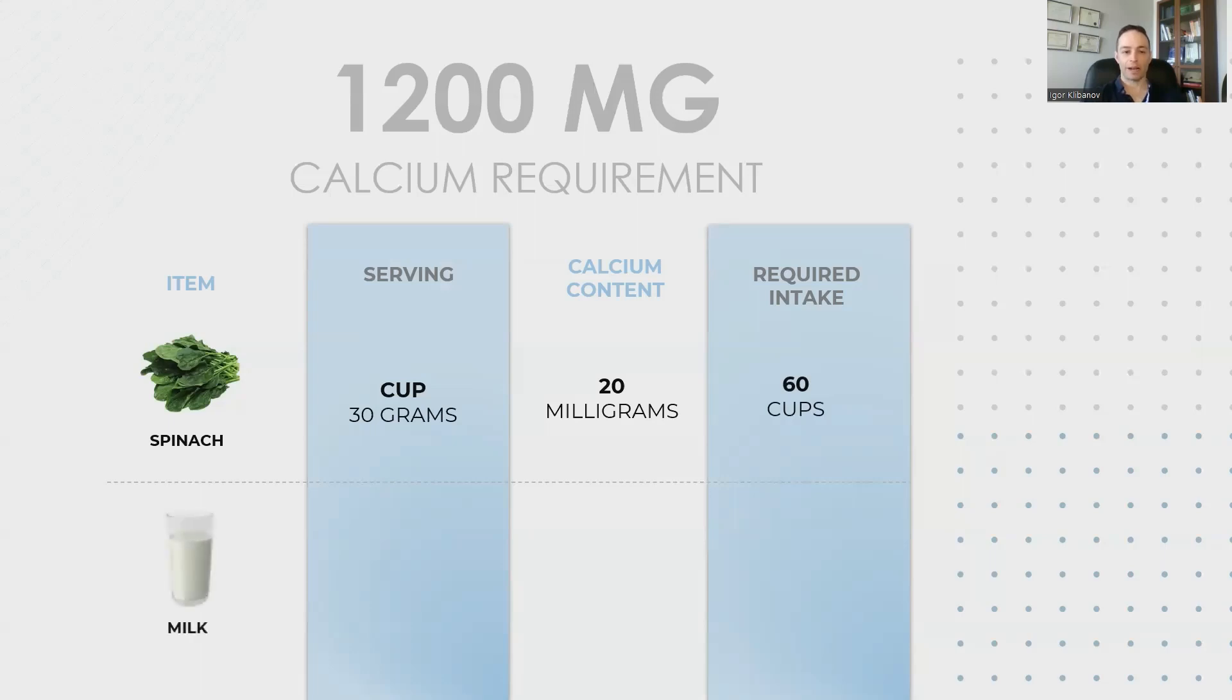By comparison, let's go back to our standard glass of milk. A serving is a cup, which is 250 milliliters. And the calcium content in that is 290 milligrams. How many cups would you need to meet your calcium requirements? About 4.1 cups per day.